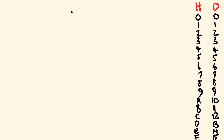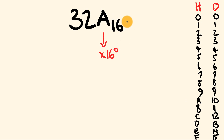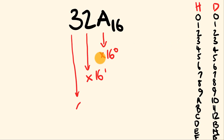Let's start with our first example. We're going to convert 32A, which is in base 16, across to its decimal equivalent. The way we do this: for each digit — A, 2, and 3 — we convert them to their decimal equivalents and multiply by successively increasing powers of 16. So A is multiplied by 16 to the power of 0, then 2 is multiplied by 16 to the power of 1, then 3 is multiplied by 16 to the power of 2, and by adding them together we get our decimal number.